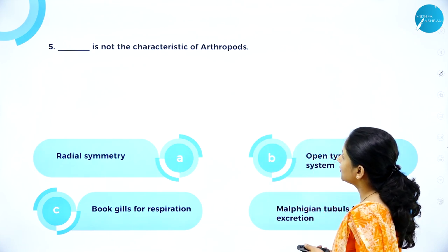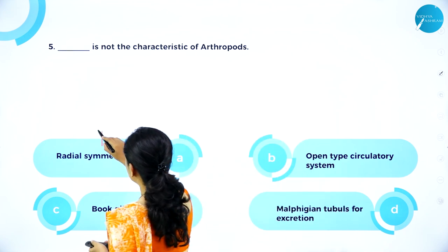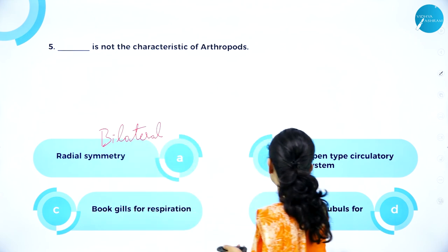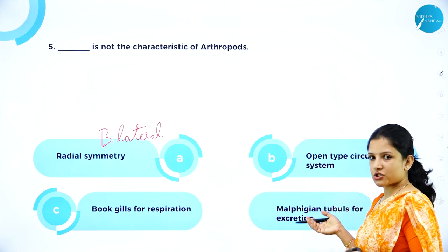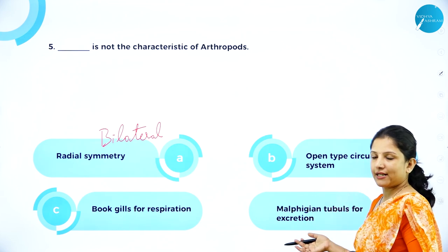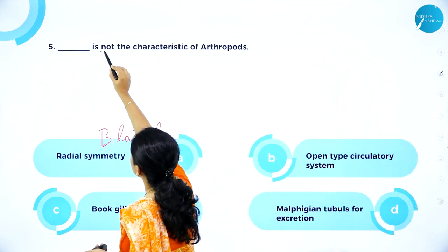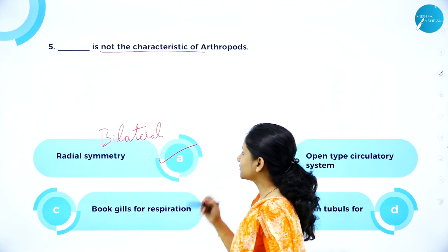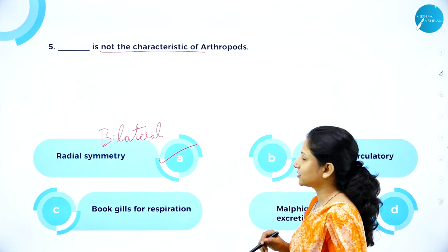MCQ: Dash is not the characteristic of arthropods. Options: radial symmetry, open type circulatory system, book gills for respiration, or Malpighian tubules for excretion. Arthropods have open type circulatory system, book gills, and Malpighian tubules — all are characteristics. However, arthropods exhibit bilateral symmetry, not radial symmetry. So radial symmetry is not a characteristic of arthropods. The right answer is A.